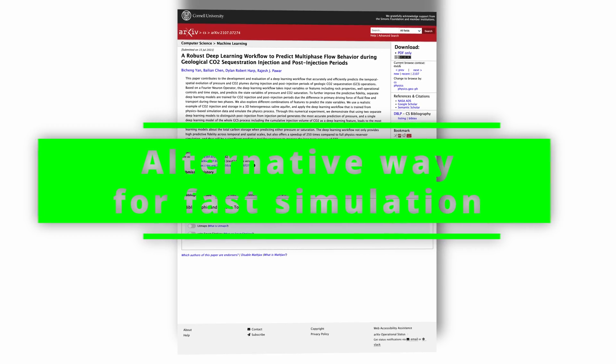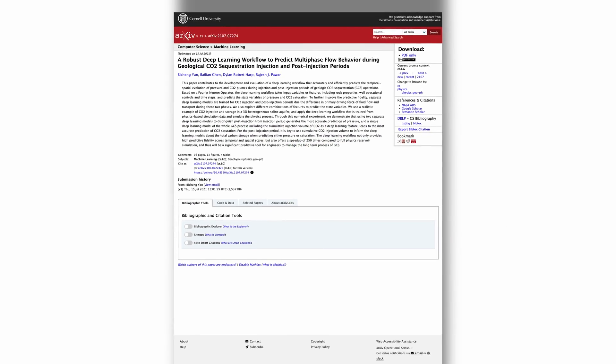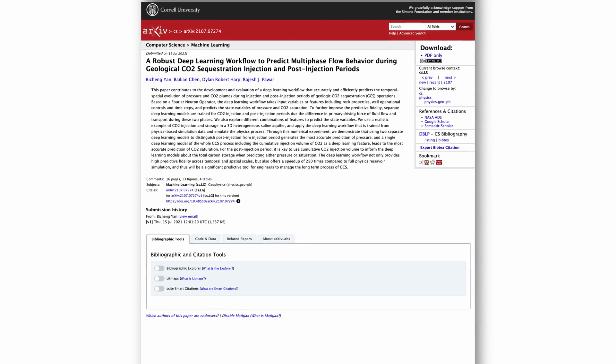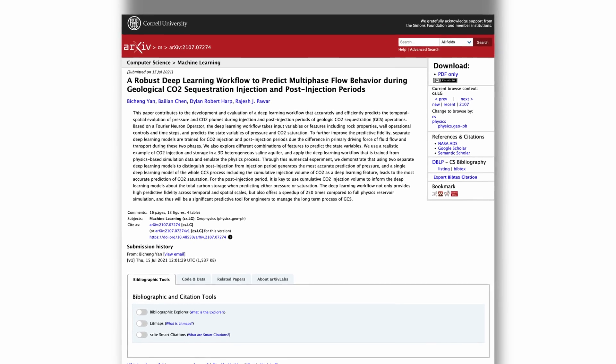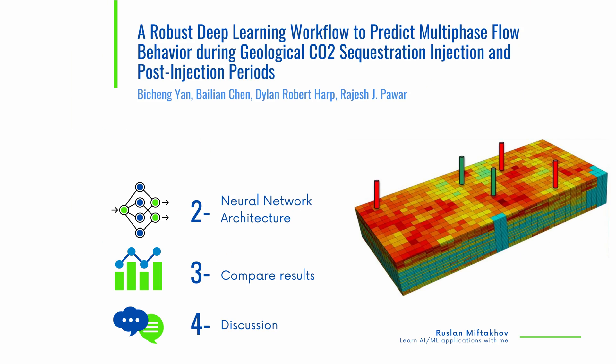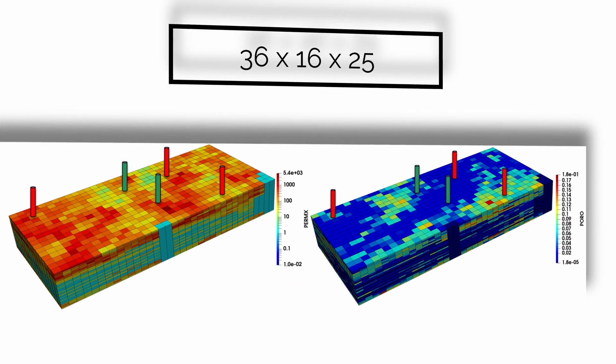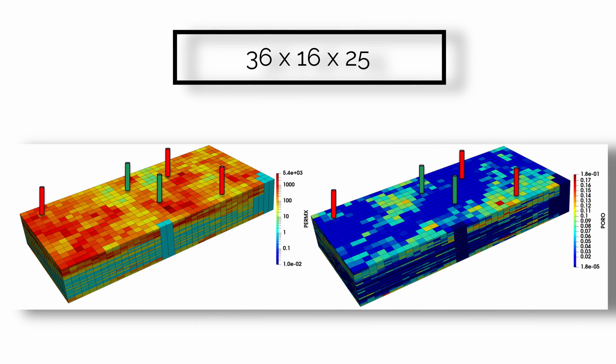This video is about the alternative way presented by the researchers at a publication from the Los Alamos National Laboratory. They propose a deep learning workflow to predict the evolution of the state variables. They simulate the process of CO2 injection and production in a 3D heterogeneous saline aquifer. The modeling reservoir domain is discretized using a corner-point grid. Using a geostatistical simulation approach, multiple equiprobable realizations of heterogeneous permeability and porosity fields are generated, and three typical realizations at P10, P50, and P90 are selected.